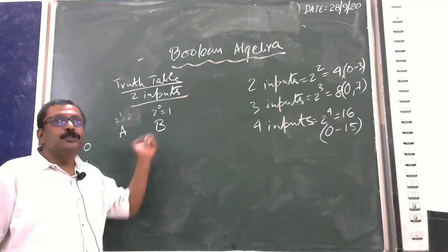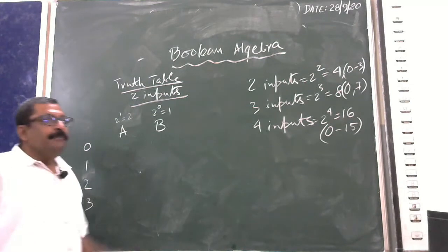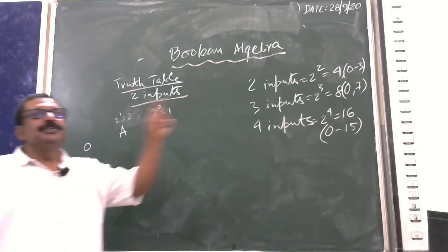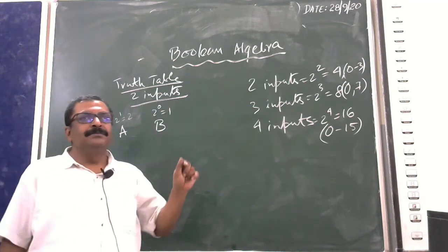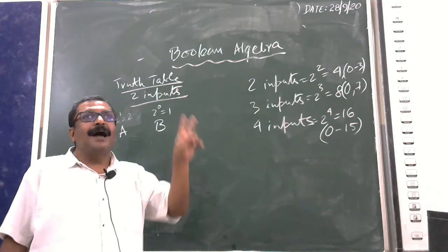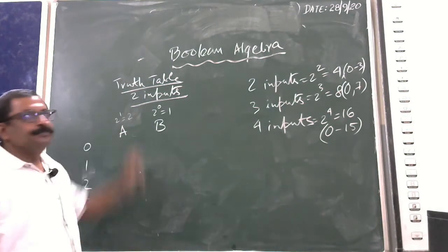There are two digits — 0 and 1 — so the number of digits is two, which is why the base is 2. The power starts at 0 from the right-hand side and increases toward the left.